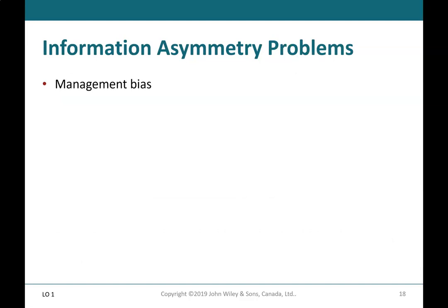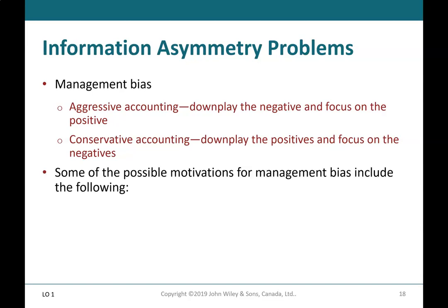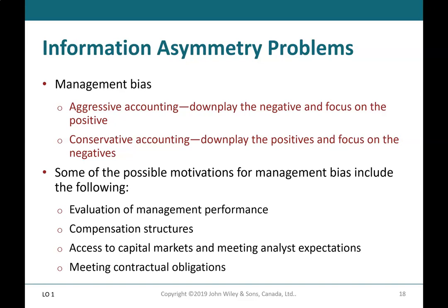Information asymmetry problems include management bias: aggressive accounting — downplay the negative and focus on the positive; conservative accounting — downplay the positives and focus on the negatives. Some possible motivations for management bias include evaluation of management performance, compensation structures, access to capital markets and meeting analyst expectations, and meeting contractual obligations.